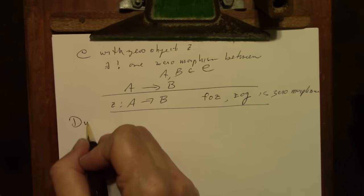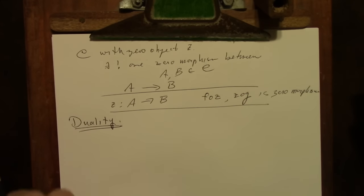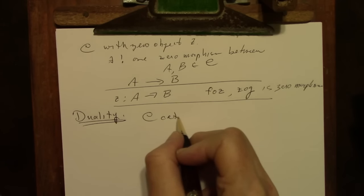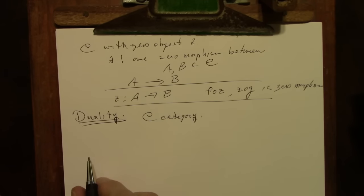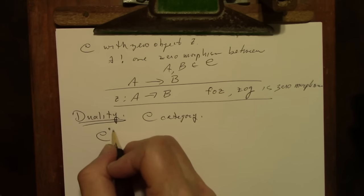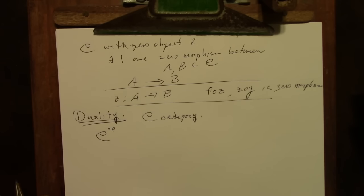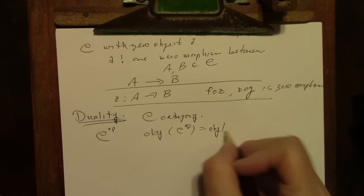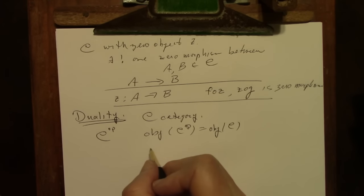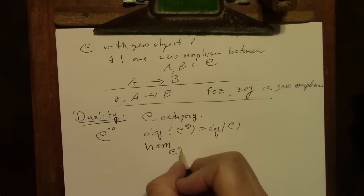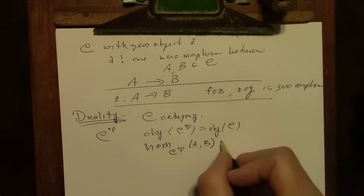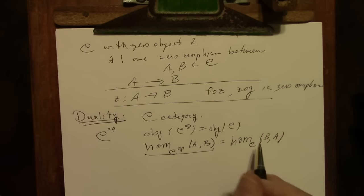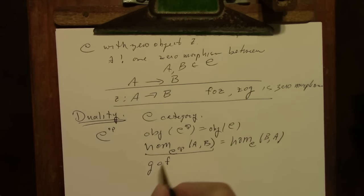I want to move on now to a really important concept that can be a bit confusing at first, and that is duality. We begin by defining something called the dual category, or the opposite category, sometimes denoted C with a superscript OP. The objects of the dual category are the same as the objects of the original category. The HOM set from A to B in the dual category is the HOM set in the original category from B to A.